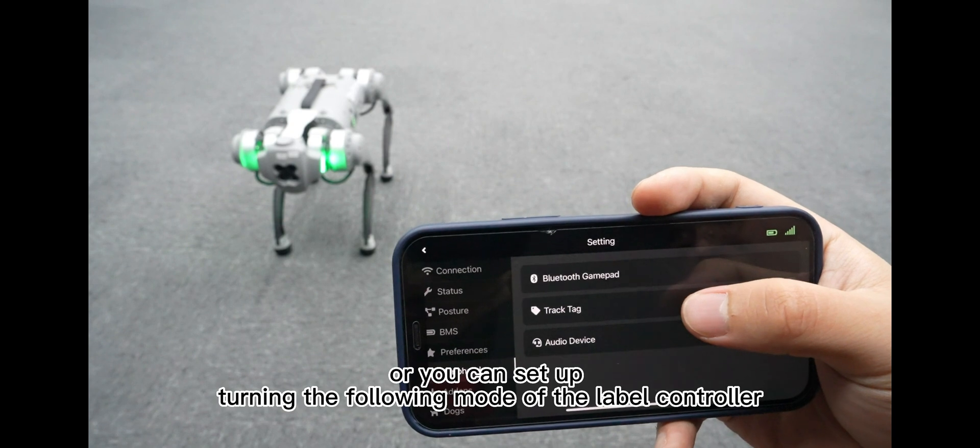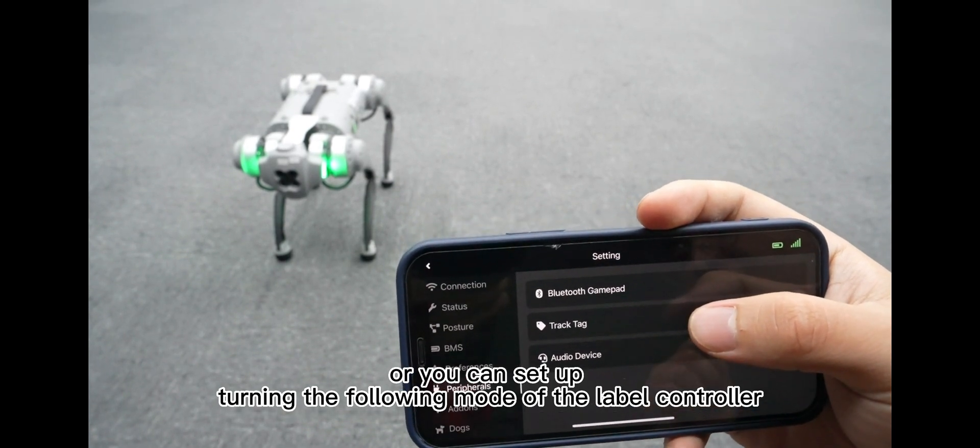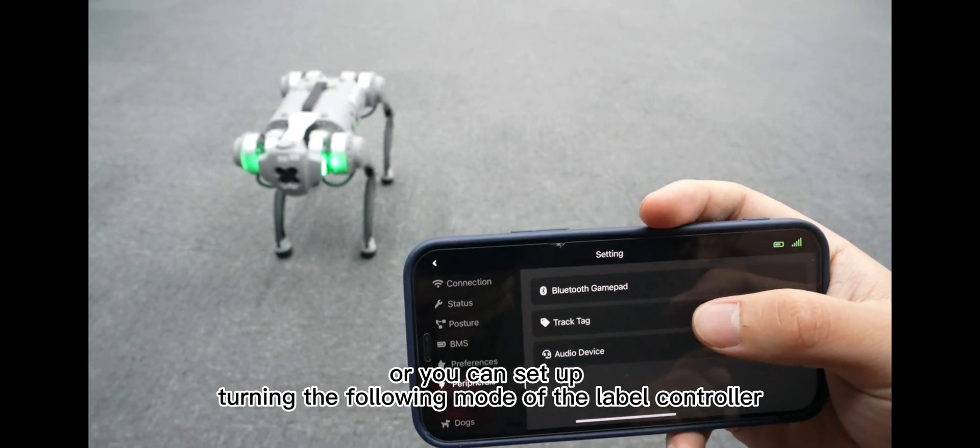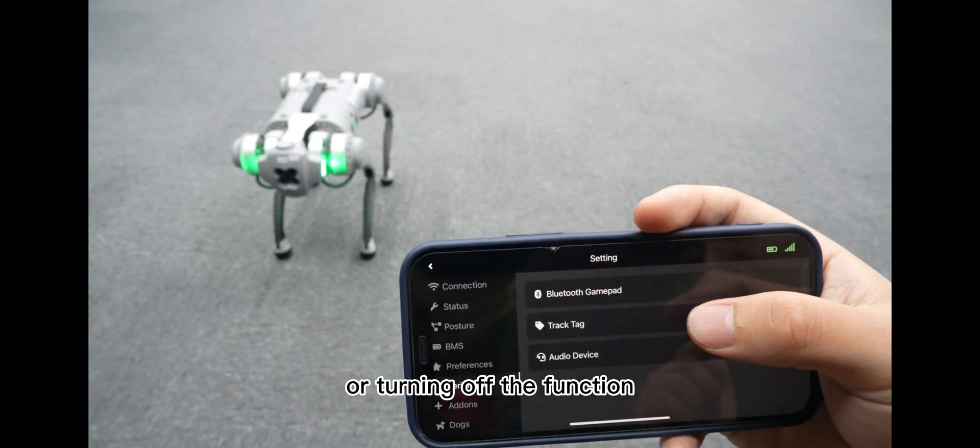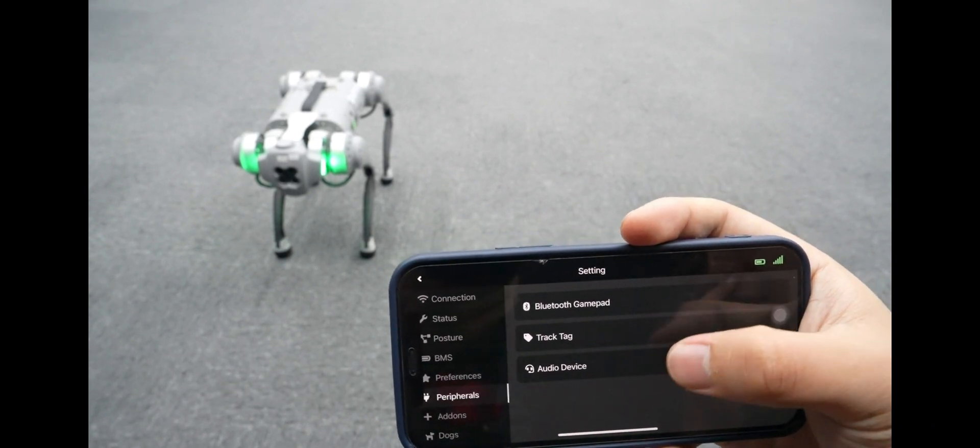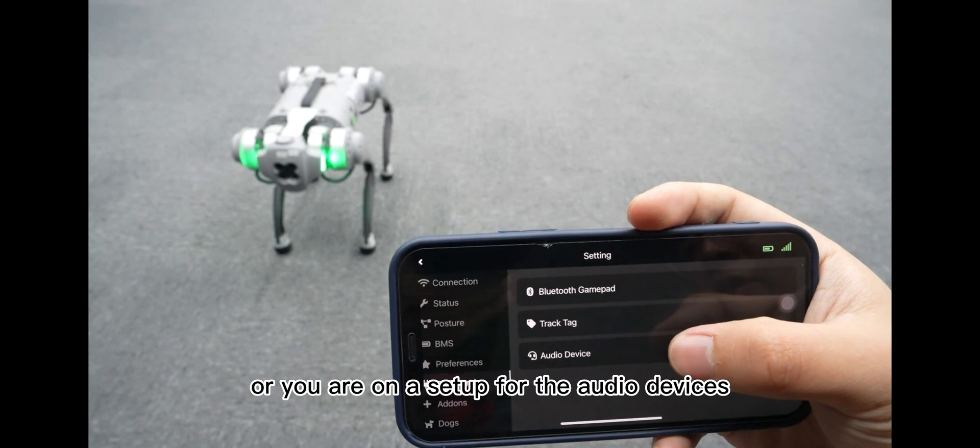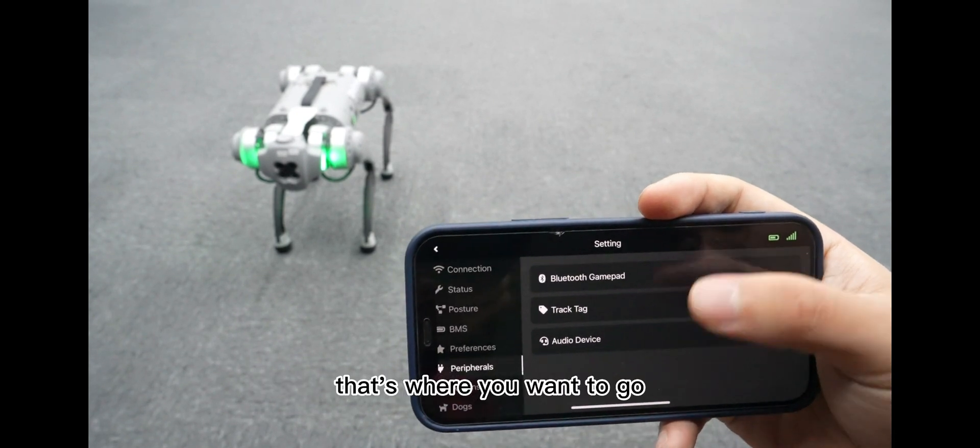Or you can set up turning the following mode of the label controller or turning off the function. Or you want to set up for the audio devices. That's where you want to go.